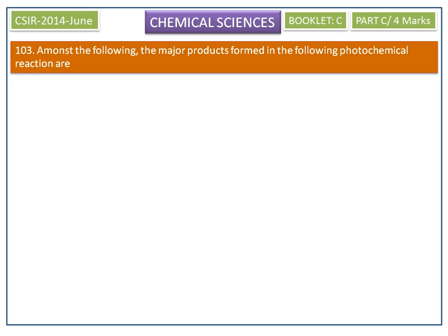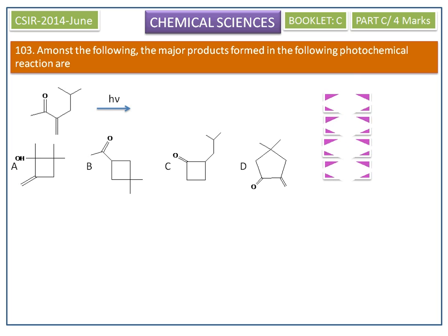Amongst the following, the major products formed in the following photochemical reactions are shown here. The possible products and options are given. This is the reactant molecule. When this molecule is irradiated